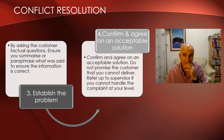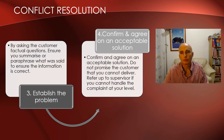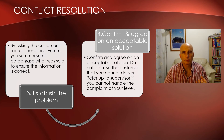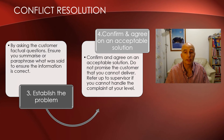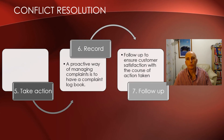Step four is to confirm and agree on an acceptable solution. In a restaurant, it's not always about giving the whole meal for free — it might be parts of it. It's really important that anything you say you can do, you must actually be able to do. If your supervisor can handle it, hand it up to the supervisor.